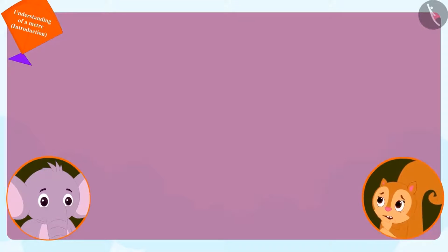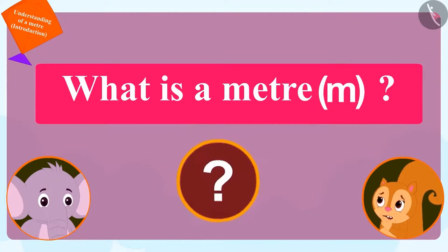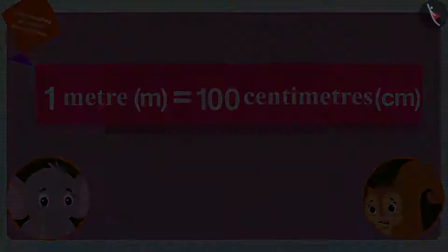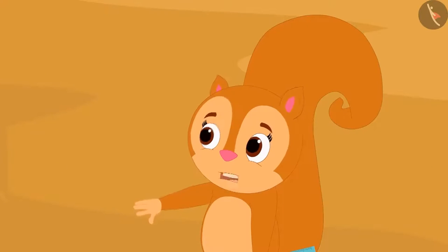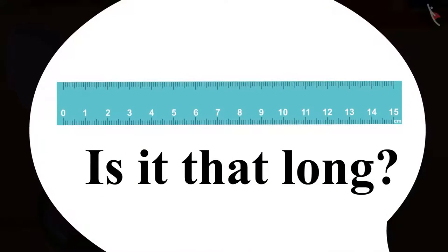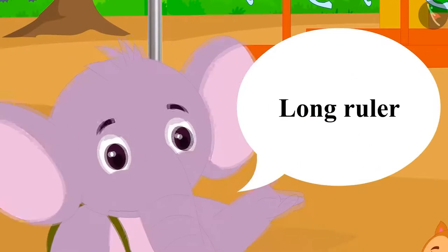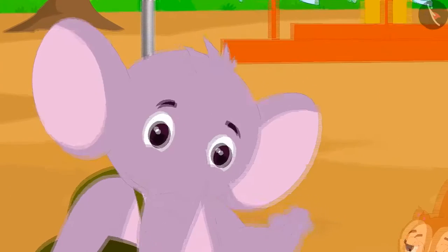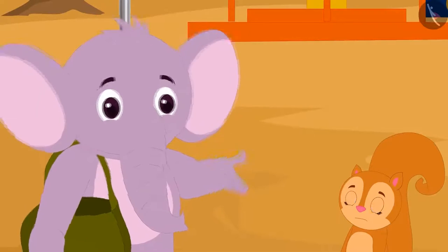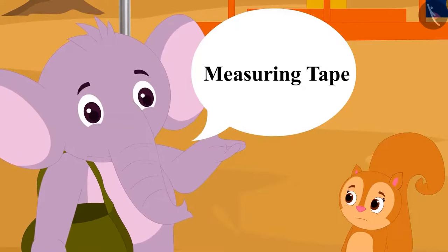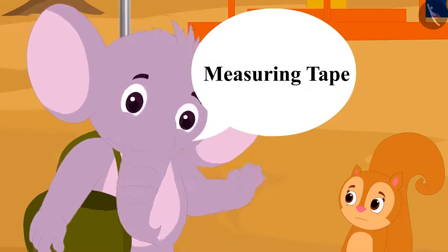Chanda immediately asked Appu, what is this meter? Appu then explained to her that one meter is equal to hundred centimeters. Chanda was shocked and asked Appu, is it possible to make such a long ruler? Yes, there is a long ruler to measure in meters. But if we have to measure the length of any object in meters, we can do this more easily by using a measuring tape.